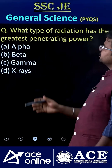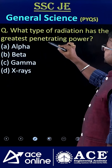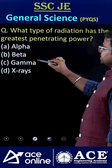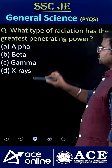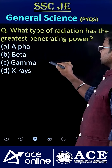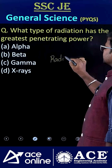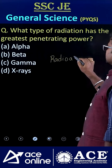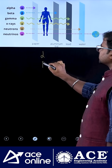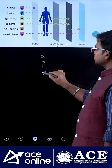Welcome to ACE Online. What type of radiation has the greatest penetrating power — alpha, beta, gamma, and X-rays? If you consider a radioactive element, it mostly emits alpha, next beta, next gamma rays.